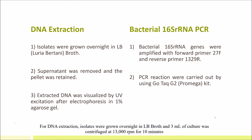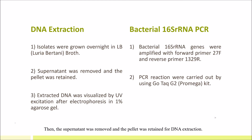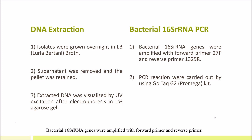For DNA extraction, isolates were grown overnight in nutrient broth and 3 ml of culture was centrifuged at 13,000 RPM for 10 minutes. Then, the supernatant was removed and the pellet was retained for DNA extraction. The extracted DNA were visualized by UV excitation after electrophoresis in 1% agarose gel. Bacterial 16S rRNA genes were amplified with forward primer and reverse primer. All PCR reactions were conducted using the GoTaq G2 Pro Mega Kit.